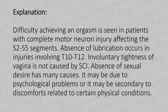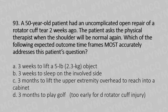Now let's move to our 93rd question. A 50-year-old patient had an uncomplicated open repair of the rotator cuff tear two weeks ago. The patient asked the physical therapist when the shoulder will be normal again. Which of the following expected outcome timeframes most accurately addresses this patient's question? Option A: 3 weeks to lift a 5 lb (2.3 kg) object. Option B: 3 weeks to sleep on the involved side. Option C: 3 months to lift upper extremity overhead to reach into a cabinet. Option D: 3 months to play golf.